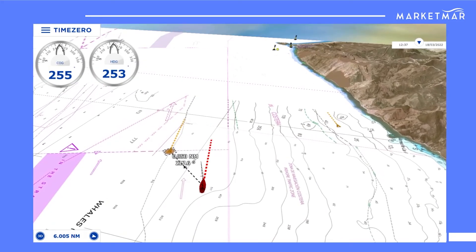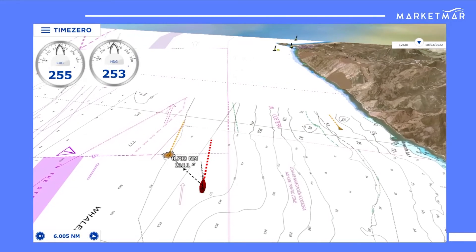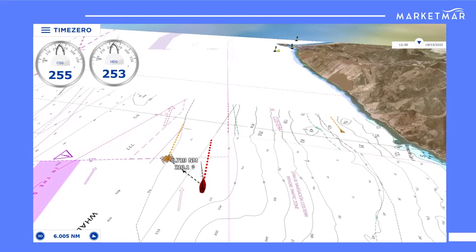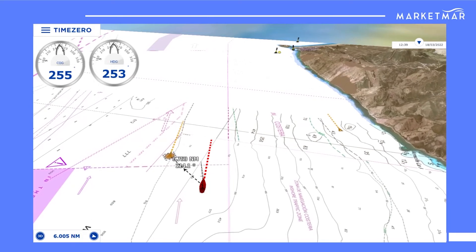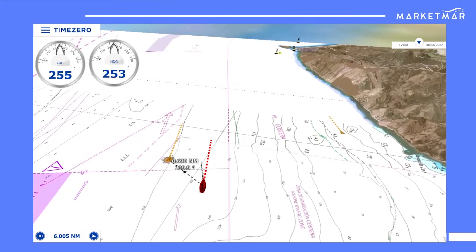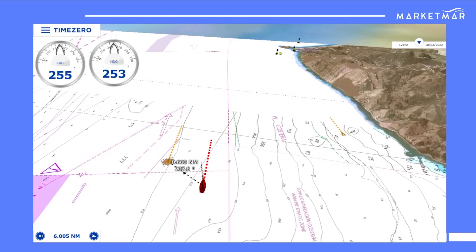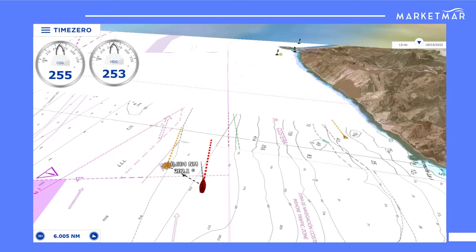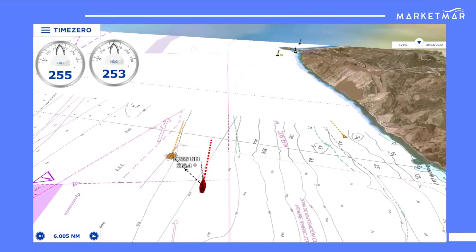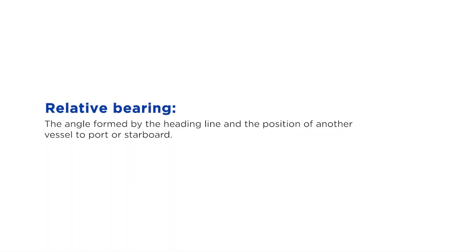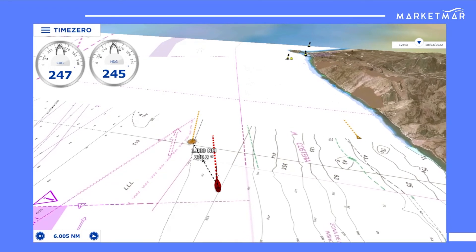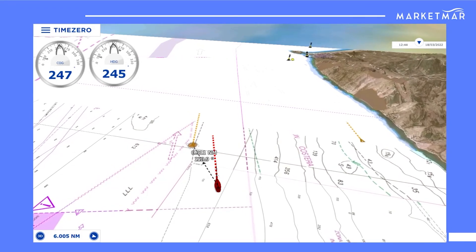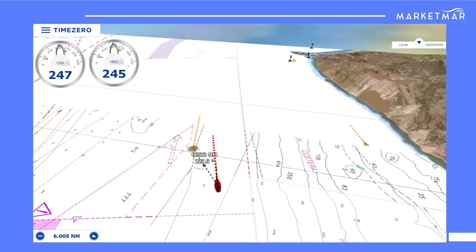Finally, we have the concept of relative bearing — a very important concept, as it is the one we will use to assess the possible risk of collision with other vessels. With relative bearing, we have to forget about the angle to north completely, since our reference point will be our own heading. That will be our new zero degrees, and from that point, from port or starboard, we will observe the angle with another vessel.